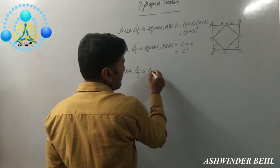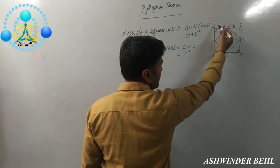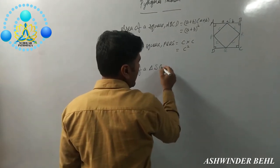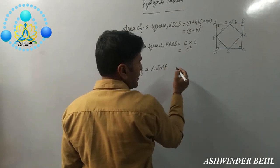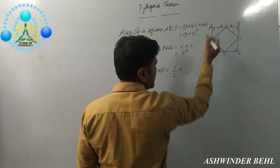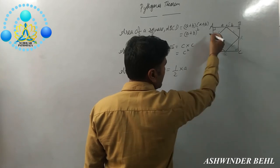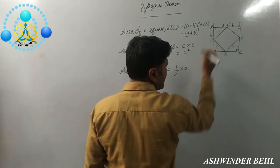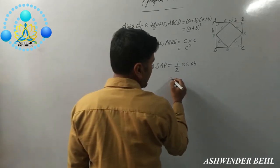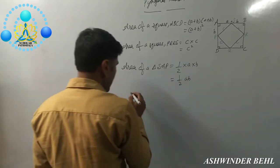Now, area of a triangle. First of all, we will take triangle SAT. That is half base into height. Base is A, height is B. So what do you get here? Half AB.